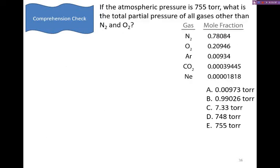All right, we have one question left in this video. Go ahead, pause the video now, read over, and try and solve this on your own before coming back. Welcome back. If the atmospheric pressure is 755 torr, what's the total pressure of all gases other than nitrogen and oxygen? So how do we do this? Well, we know that Dalton's law of partial pressures says that the sum of all of the partial pressures is going to equal the total. In other words, we could sum up the partial pressures of each of the gases, and that would find the total gas.